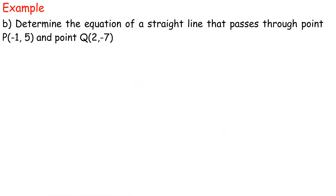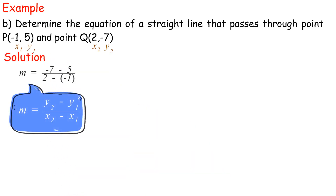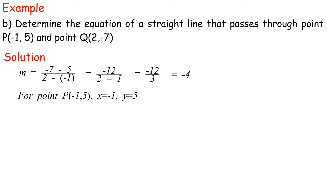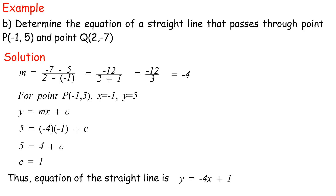Example b: Determine the equation of a straight line that passes through P(-1, 5) and Q(2, -7). m equals negative 7 minus 5 over 2 minus negative 1 equals negative 12 over 3 equals negative 4. Using P(-1, 5): x equals negative 1, y equals 5. Substituting into y equals mx plus c: 5 equals negative 4 times negative 1 plus c, so 5 equals 4 plus c, giving c equals 1. Therefore the equation is y equals negative 4x plus 1.